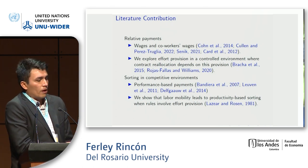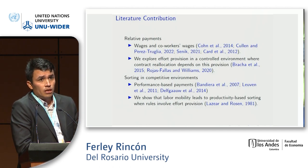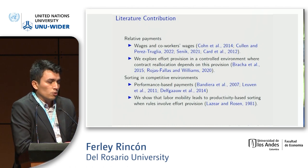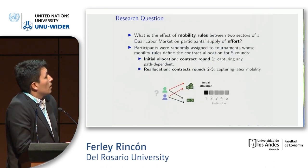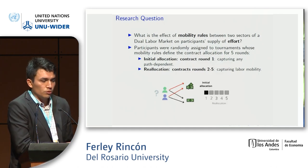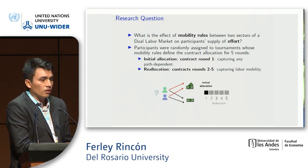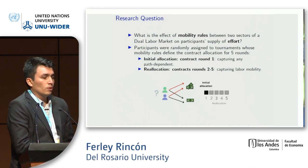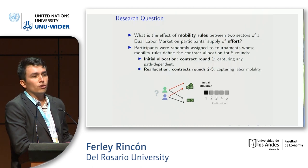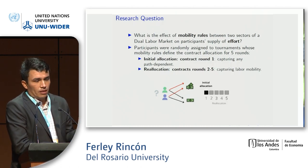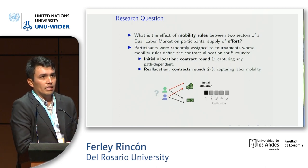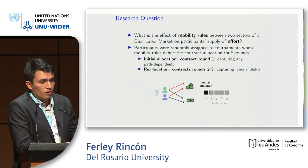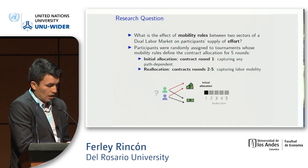Natural and field experiments have provided evidence that performance-based payment affects effort provision, and in this project we show that labor mobility leads to productivity-based sorting when rules involve effort provision. To understand the effect of mobility rules between two sectors on participants' supply of effort, participants were randomly allocated to tournaments whose mobility rules define the contract allocation for five rounds. This experiment has two types of mobility rules: the initial allocation rule and the reallocation rules from round two to round five, which capture labor mobility.